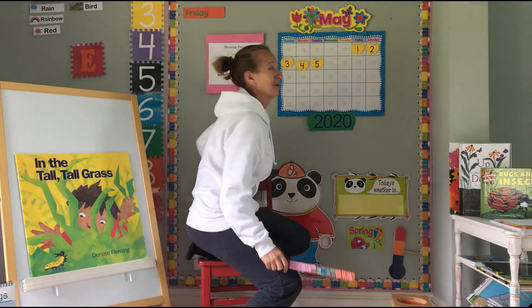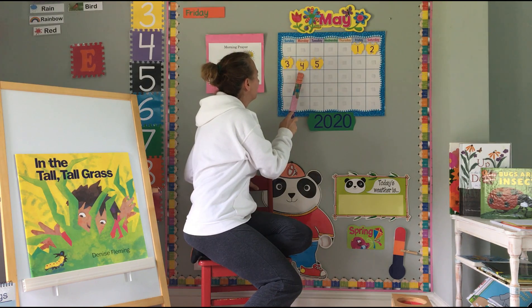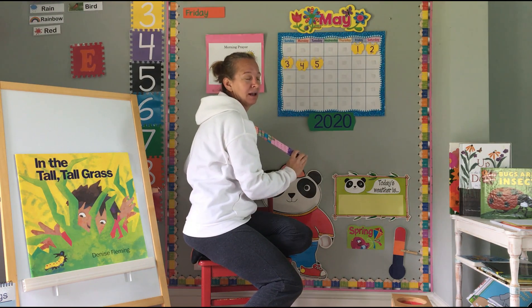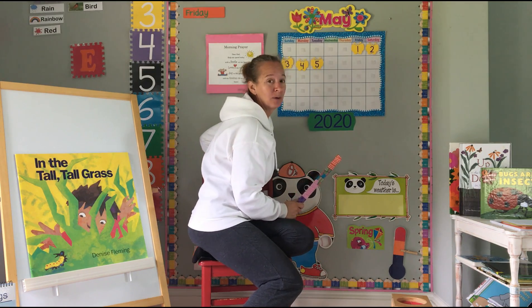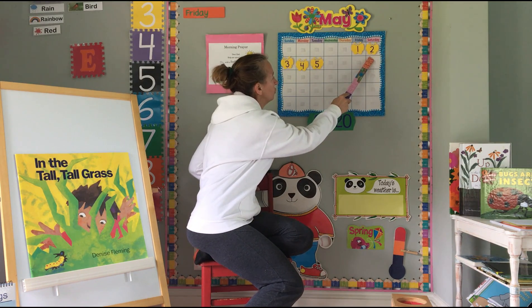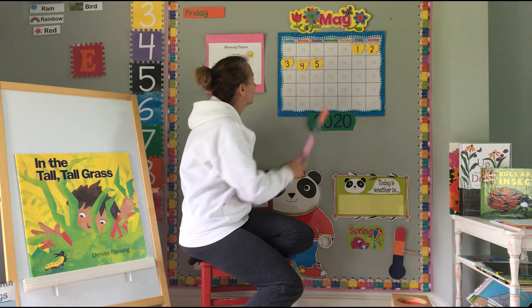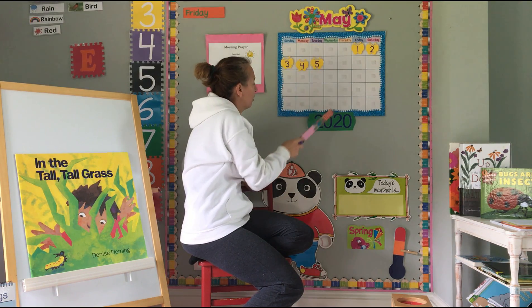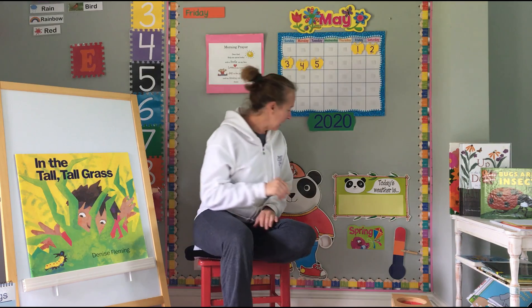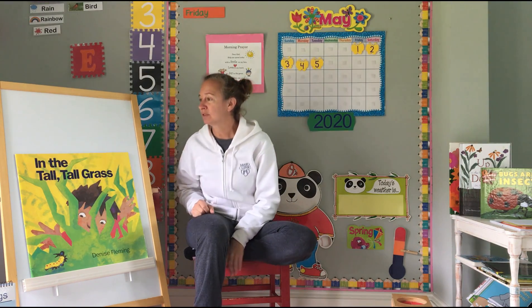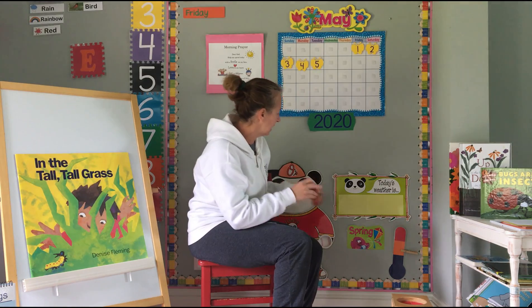I'm counting — you guys are gonna do some jumping! Here we go: one, two, three, four, five. You know what, that was way too easy. Let's do some jumping again, maybe this time you're spinning in a circle. Here we go: one, two, three, four, five. Excellent! Today is Tuesday, May 5th, 2020.